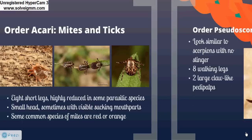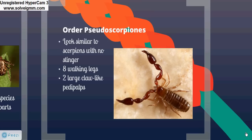A less well-known order is Pseudoscorpiones. These arachnids look similar to scorpions but have no stinger. They have eight walking legs and two large claw-like pedipalps. While they may look alien, they are actually common leaf litter inhabitants. Though often only a few millimeters long, they are important predators in their habitat.